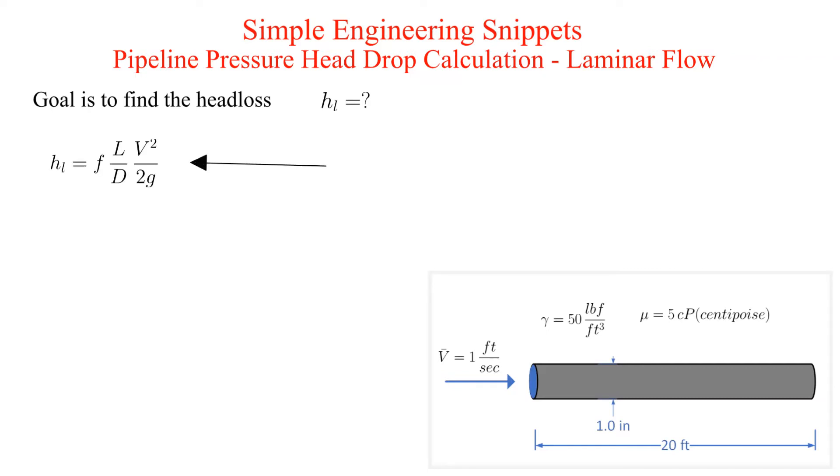The Darcy-Weisbach equation can be used to calculate the head loss. We know everything in this equation except the friction factor. In general the friction factor is a function of the relative roughness and the Reynolds number.